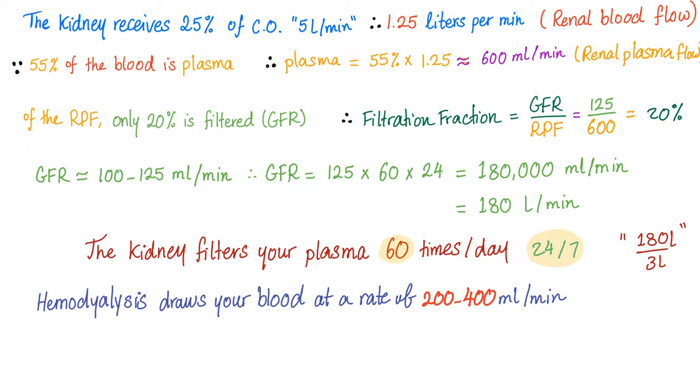As you know, the kidney receives 20 to 25% of the cardiac output. The cardiac output is 5 liters per minute on average. So, 25% is a liter and quarter per minute. As you know, 55% of the blood is plasma. The other 45% is red blood cells. That's why the hematocrit value normally is around 45%. So, the plasma volume is 55% times the blood volume equals around 600 mL per minute. We call this the renal plasma flow. Then, of the renal plasma flow, only 20% is filtered, called the GFR. So, the filtration fraction, which is GFR over renal plasma flow, is 125 over 600 or around 20%. Normal GFR is between 100 to 125 and it differs by age.